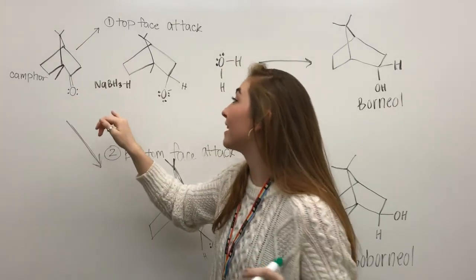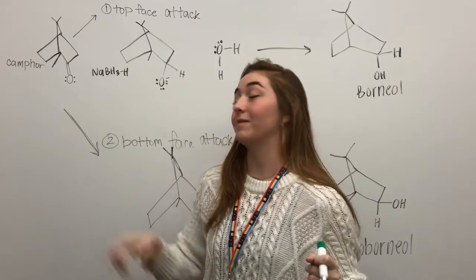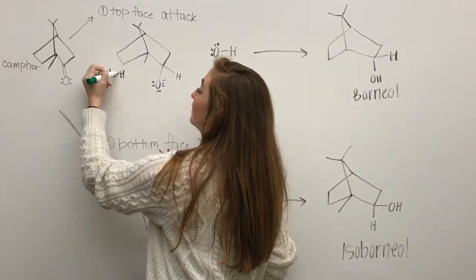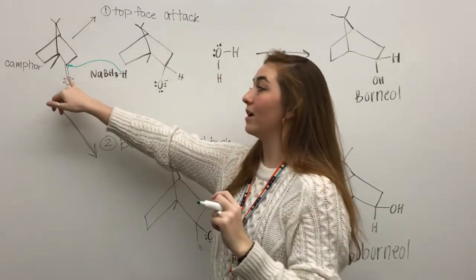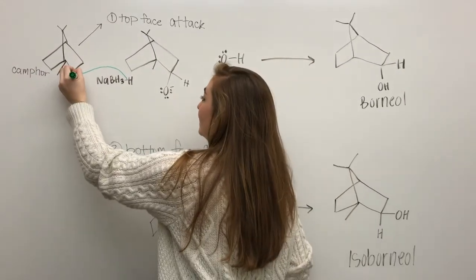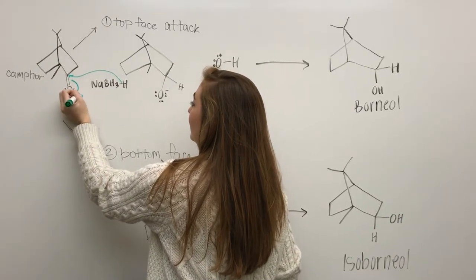The carbon can be attacked by sodium borohydride from the top and the electrons from this bond will attack this carbon, causing this bond to break and the electrons to be pushed to this oxygen, causing it to become negative.